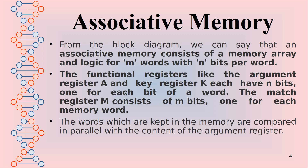The argument register and key register both have n bits. The match register consists of m bits for each memory word. The words which are kept in memory are compared in parallel with the content of the argument register. The content is derived from the argument register and it parallely, simultaneously, accesses the storage.